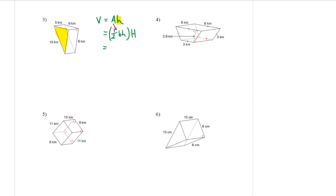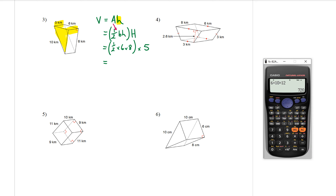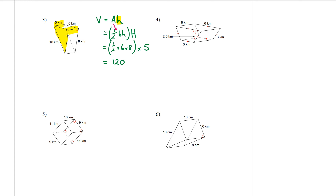Substituting into the formula: for the triangle, the base and the height are joined by the right angle. Six and eight are the base and height of that triangle, so half times six times eight gives the area of the triangle. The capital H — the height going backwards along the prism — is five. So: half times six times eight times five. Everything is multiplied together, so no brackets are needed. The answer is 120 kilometres cubed.